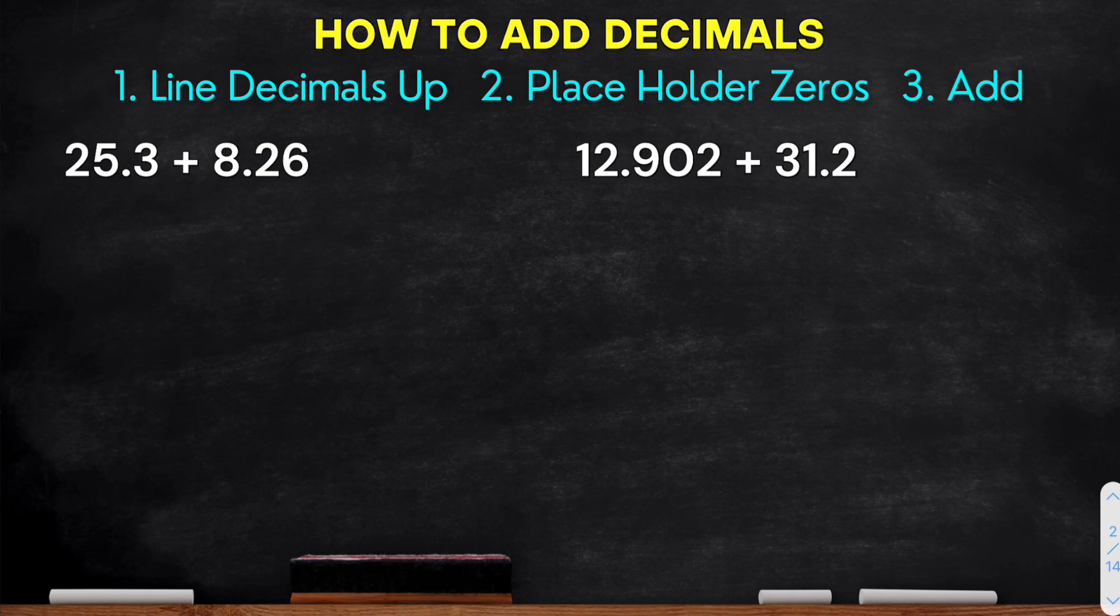So to add decimals, we will follow these three simple steps. First step, line decimals up. Second step, placeholder zeros. And third, add the decimals.